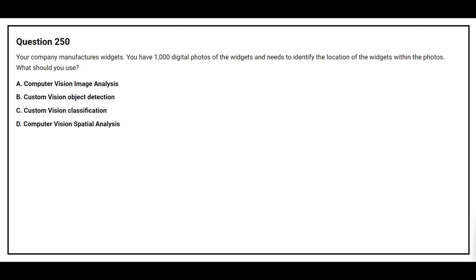Question number 250. Your company manufactures widgets. You have 1000 digital photos of the widgets and need to identify the location of the widgets within the photos. What should you use? Option A: Computer Vision Image Analysis. Option B: Custom Vision Object Detection. Option C: Custom Vision Classification. Option D: Computer Vision Spatial Analysis. The correct answer is option B, Custom Vision Object Detection.